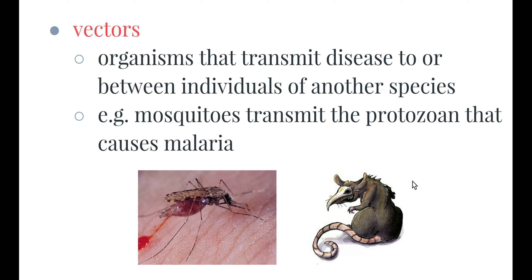Vectors are organisms — actual animals — that transmit disease to or between individuals of another species. As shown in the picture, mosquitoes are the vectors of malaria. Malaria is caused by a protozoan, and when a mosquito bites an infected person it draws blood into its system; when it then bites an uninfected person, it first injects a small amount of that blood back, transferring the protozoan. The rat was the vector responsible for the massive outbreak of the plague, carrying the pathogen and biting people as it traveled through the slums.